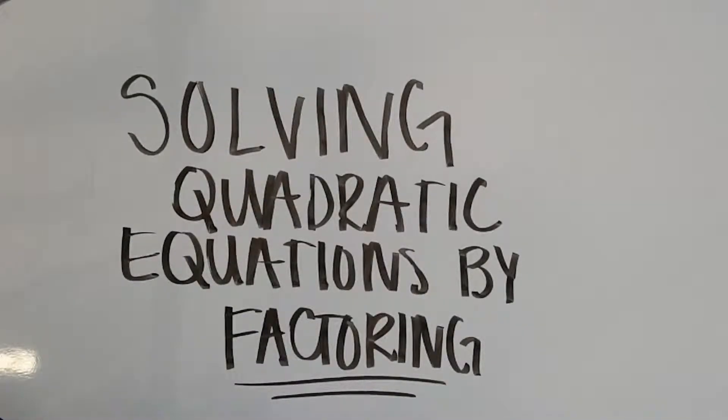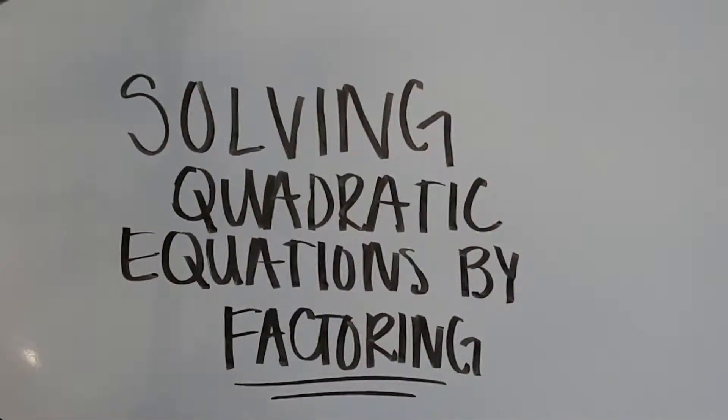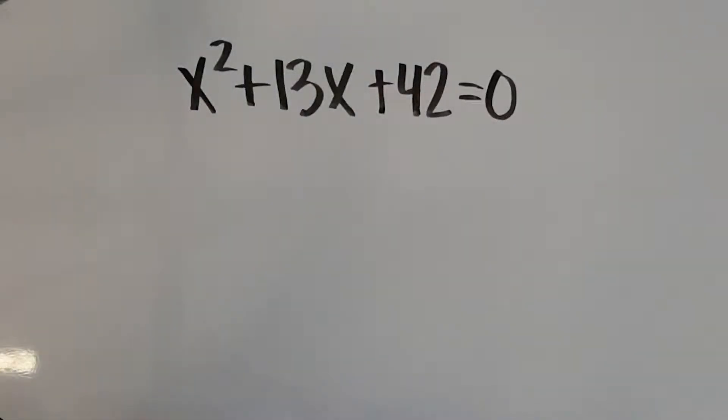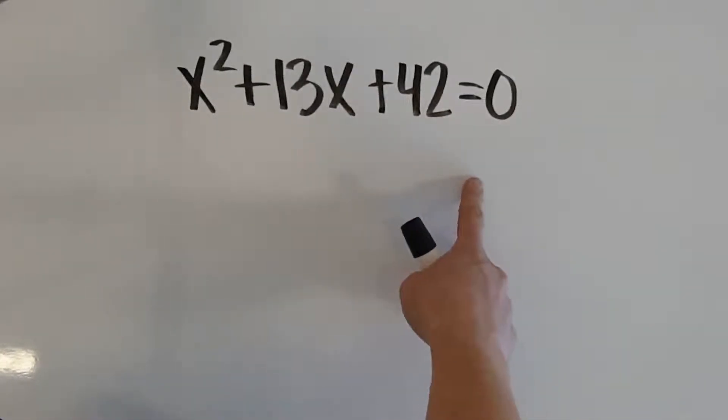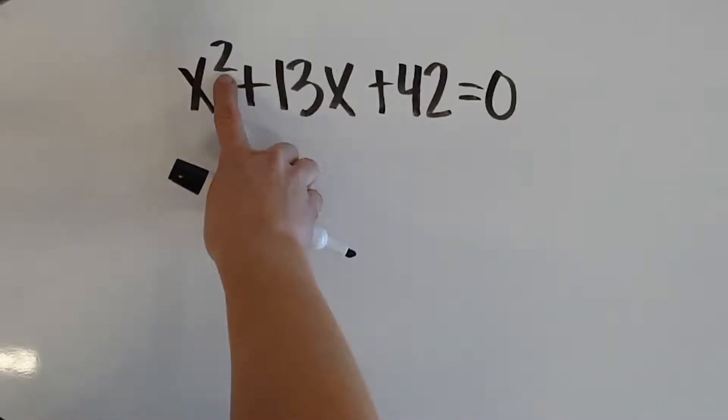In this video, we're going to learn how to solve quadratic equations by factoring. So in this equation, we have x squared plus 13x plus 42 equals 0. We know we're solving a quadratic equation because our highest exponent is 2.